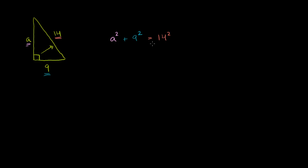And from here, we just have to solve for a. So we get a squared plus 81 is equal to 14 squared. And in case we don't know what that is, let's just multiply it out. 14 times 14. 4 times 4 is 16. 4 times 1 is 4, plus 1 is 5. Let's take a 0 there. 1 times 4 is 4. 1 times 1 is 1. 6 plus 0 is 6. 5 plus 4 is 9. Bring down the 1. It's 196.